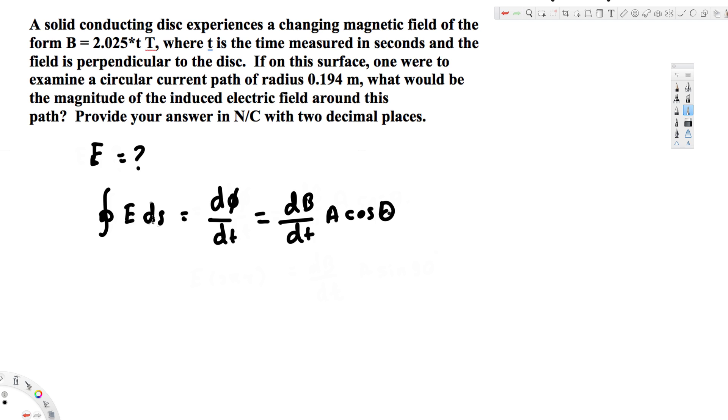If you integrate for this, since we're dealing with a circle, that's going to be E times 2πr. And dB/dt is going to remain the same.